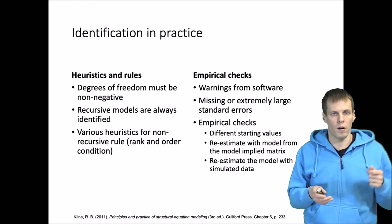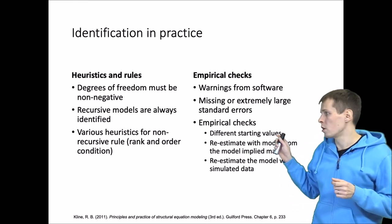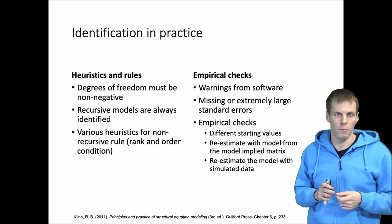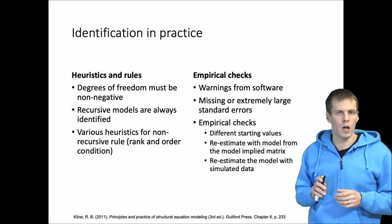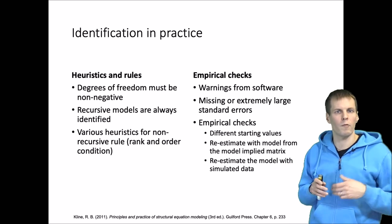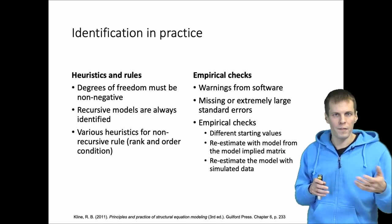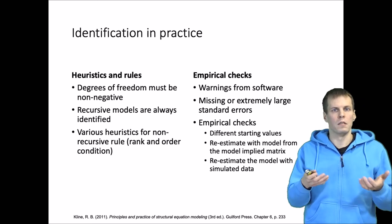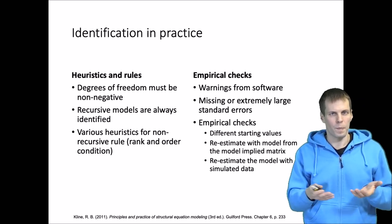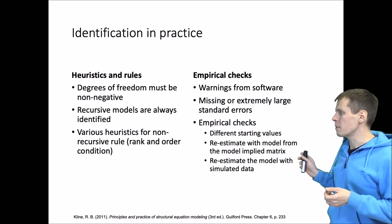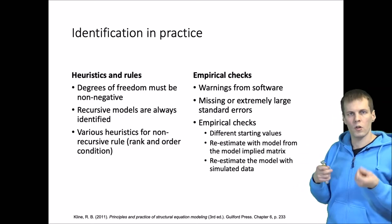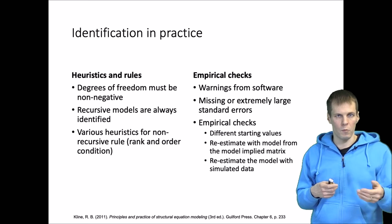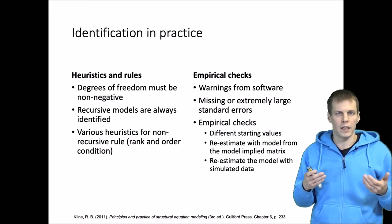There are other classes of models where two different sets of starting values might converge to two different solutions without immediately implying an identification problem. But in this class of models, identification can be easily checked by running the model with different starting values. If you choose five different sets and always get the same estimates, you can be pretty certain the model is identified. You can also re-estimate the model with the model-implied covariance matrix, and if you get the same result, that is an indication the model may be identified.